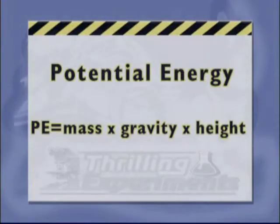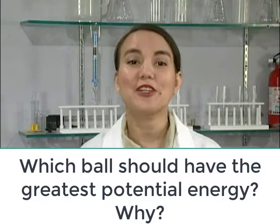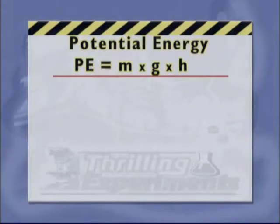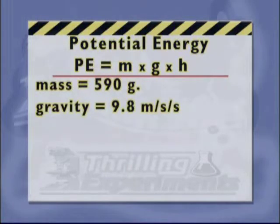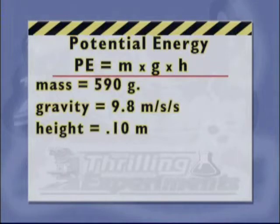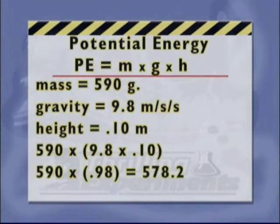The equation for potential energy is PE equals mass times gravity times height. The masses are the same. Gravity is always 9.8 meters per second per second. The height is the height of our ramp. Let's find the potential energy of the basketball. The mass was 590 grams. Gravity is 9.8 meters per second per second. The height of our ramp is 0.10 meters. Multiply 9.8 times 0.10, and we come up with 0.98. Now multiply 590 times 0.98, and we have our potential energy of 578.2.